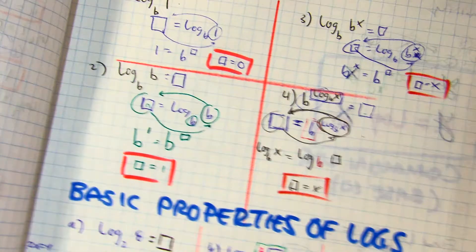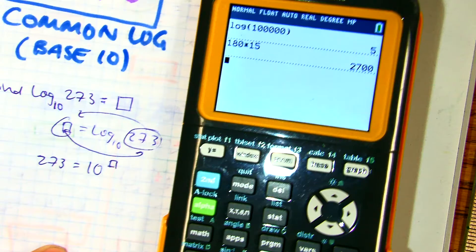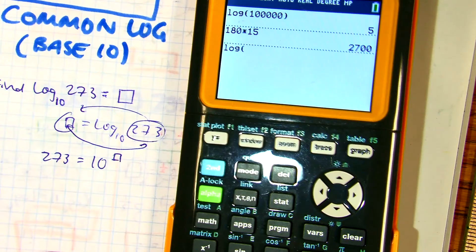So, let's go ahead and evaluate log of 273. So, with your calculator, log 273.